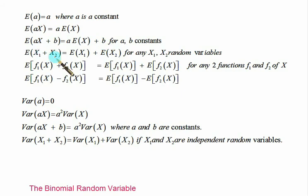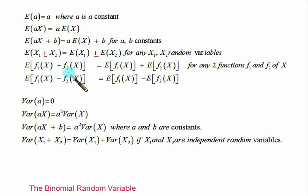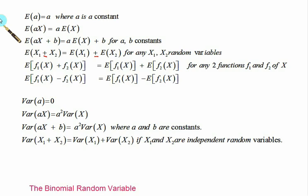If you need to find the expectation of two variables x1 plus x2, you independently calculate each, where x1 and x2 are two random variables. Similarly, if you have E(f(x1) + f(x2)), you calculate both function values independently — this is valid for both plus and minus operations.